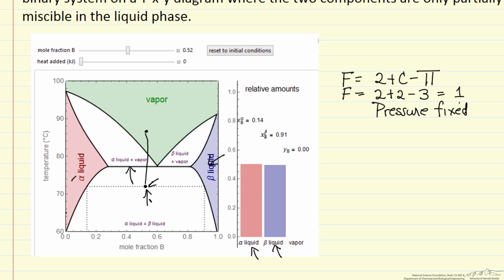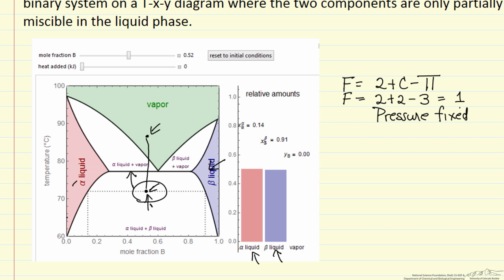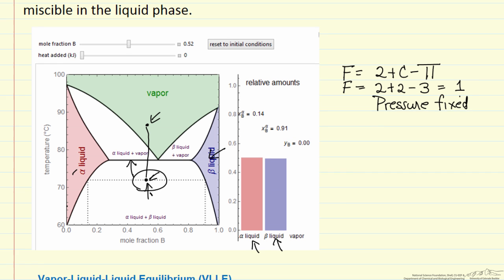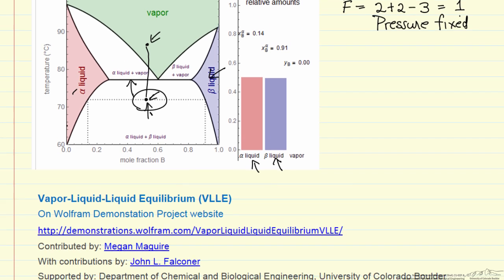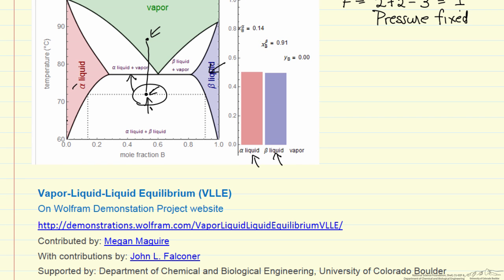What we want to do now is look at this simulation to understand how we go from two immiscible liquid phases to all vapor in a closed container with fixed composition. The simulation I'm going to use is available online on the Wolfram Demonstration Project.